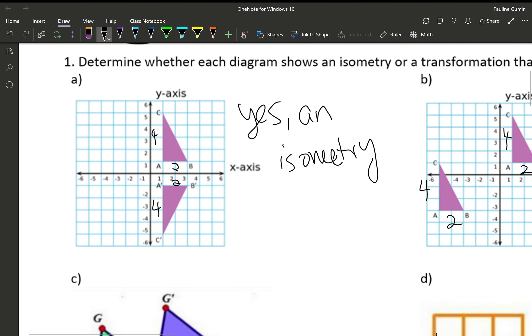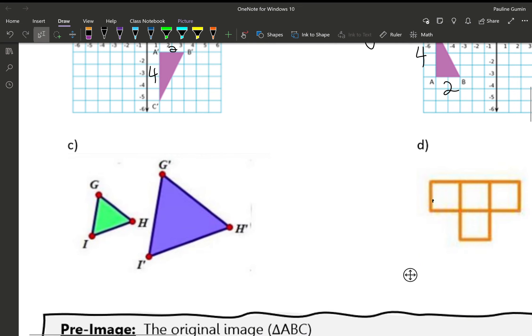Now letter C. Take a look at these two triangles. The green one is definitely smaller than the purple one, because of that, no, not an isometry.